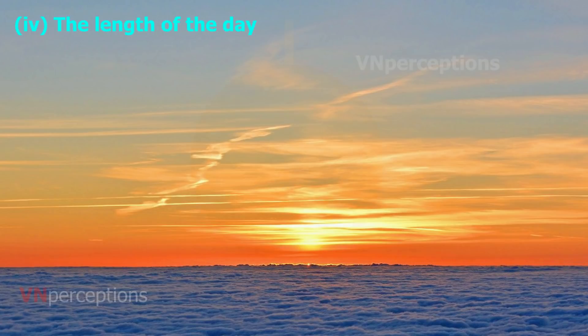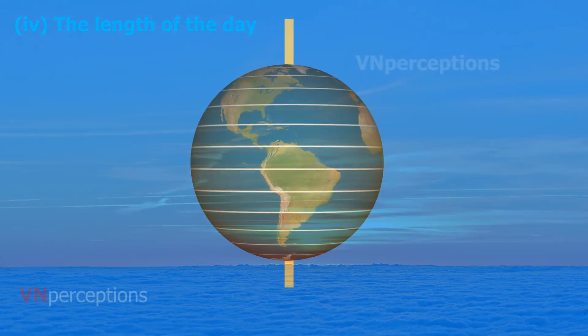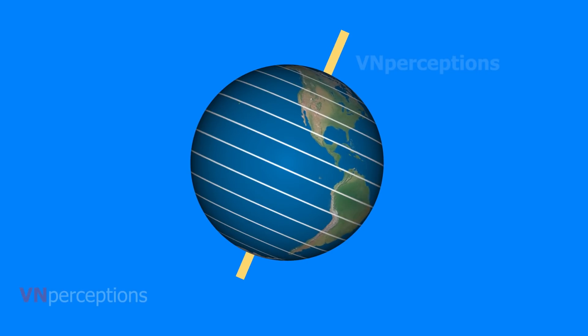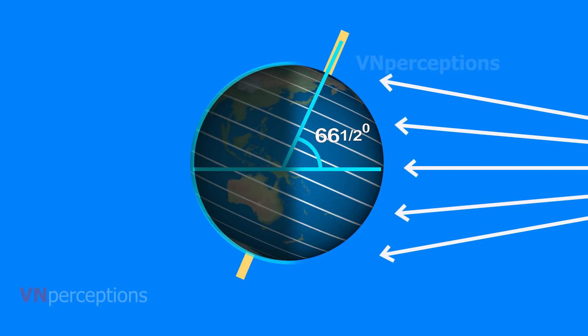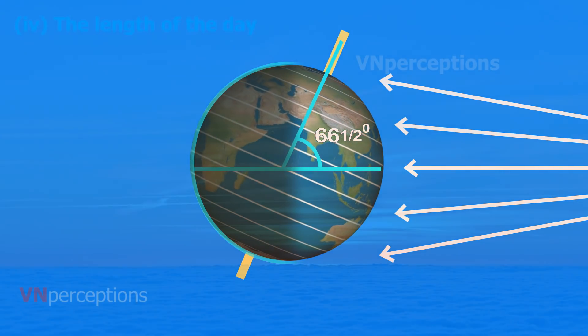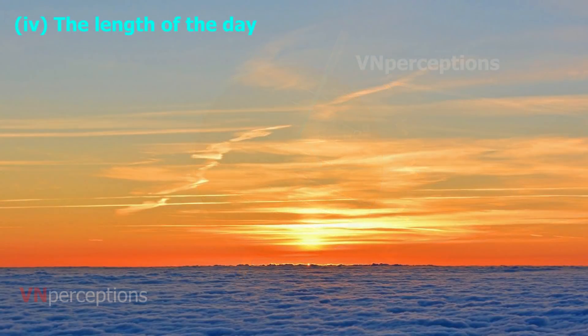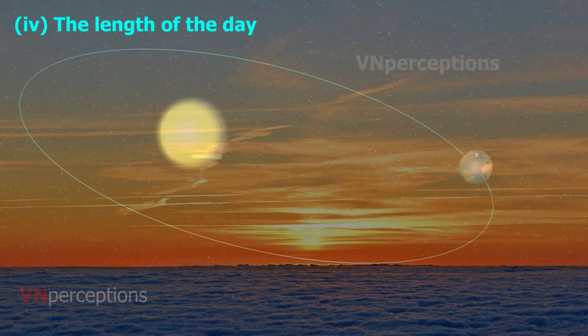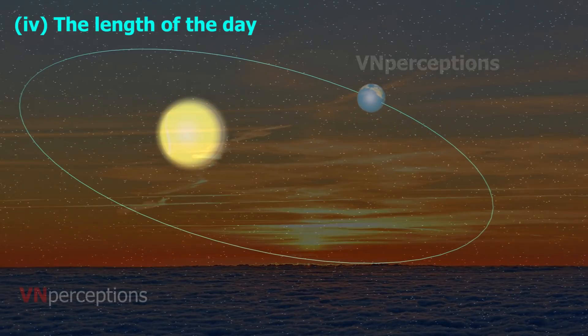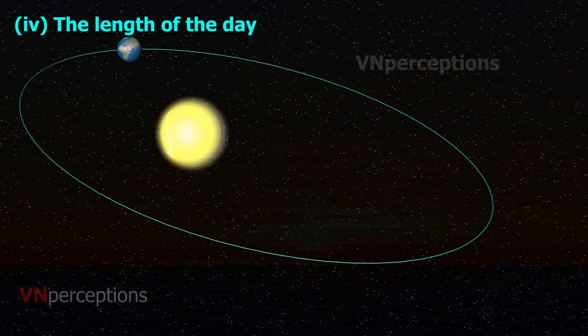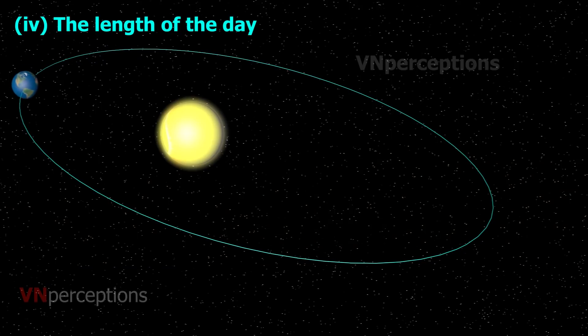The earth's axis makes an angle of 66.5 degrees with the plane of its orbit around the sun and has a greater influence on the amount of insolation received at different latitudes. Each day on planet earth, at different places, there is variation in the length of day and night. This is because of the revolution of the earth around the sun with an inclined axis.